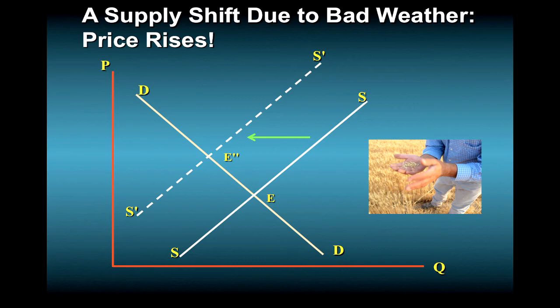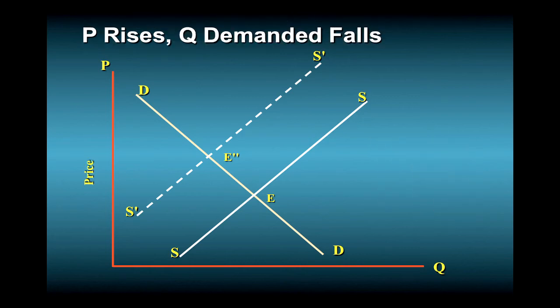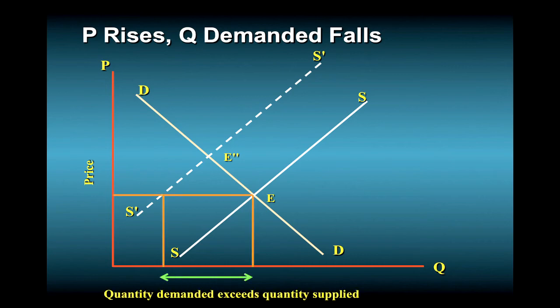So what do you think happens next? Well, the bad harvest causes bakers to produce less bread at the old price, so quantity demanded exceeds quantity supplied. The price of bread therefore rises, encouraging production and thereby raising quantity supplied. This simultaneously discourages consumption and lowers quantity demanded.